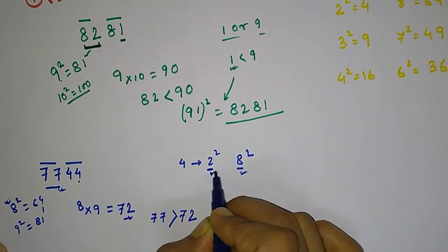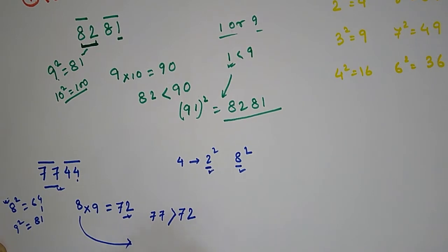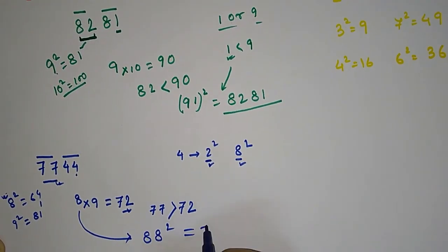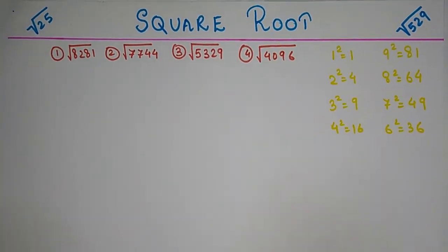So our answer will be 8 from here and 8 from here, that is 88 squared equals 7744. We will move on to the next example, and that is 5329.